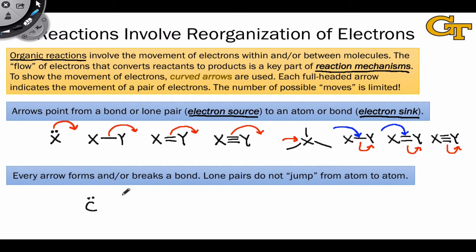Say you have a carbon with a lone pair and, I don't know, a nitrogen in another atom. We can't do something like transfer a pair of electrons from one atom to another using curved arrows.